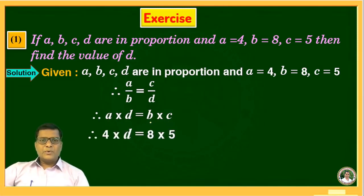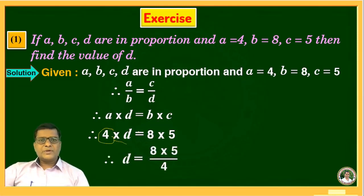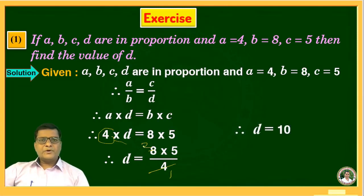Therefore 4 into D is equal to 8 into 5. Transfer 4 to the other side: D is equal to 8 times 5 divided by 4. Simplifying: 4 ones are 4, 4 twos are 8, 5 twos are 10. Therefore D is equal to 10.